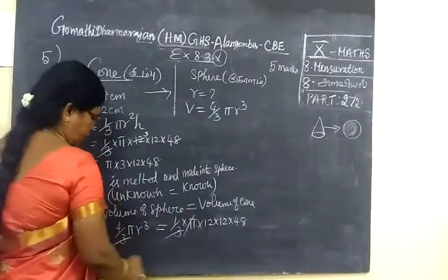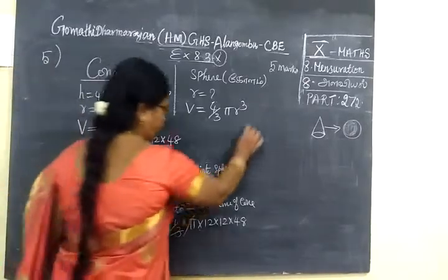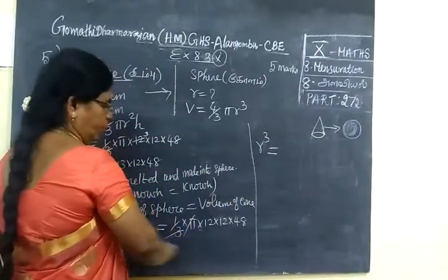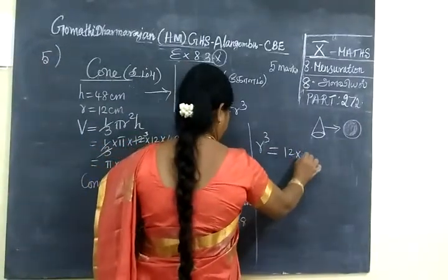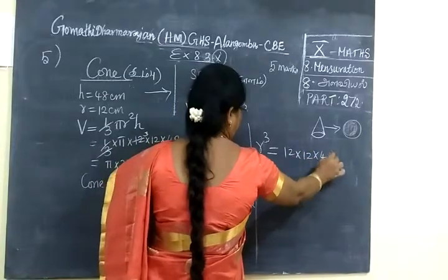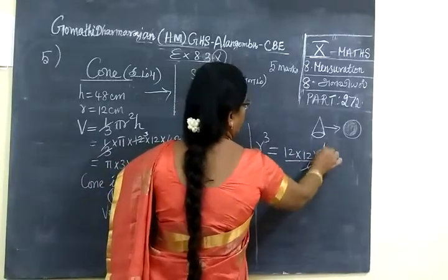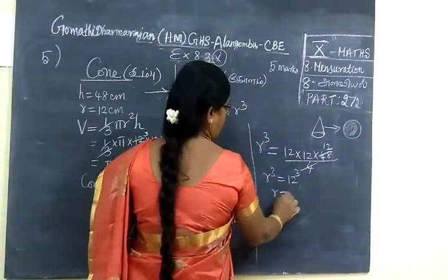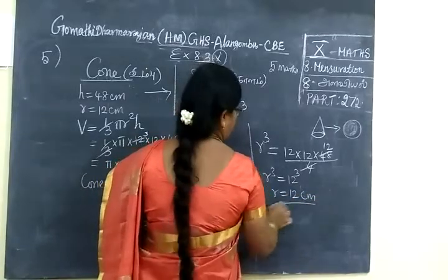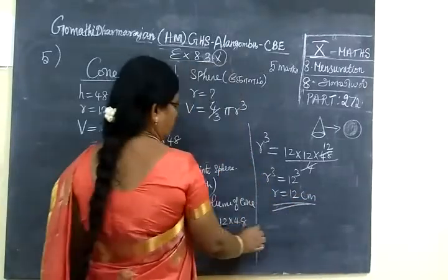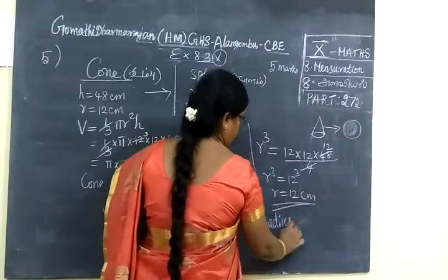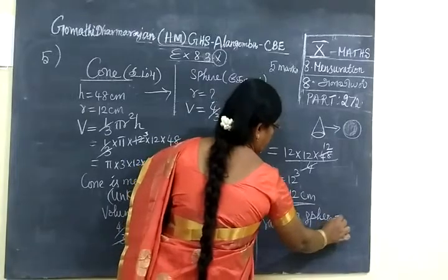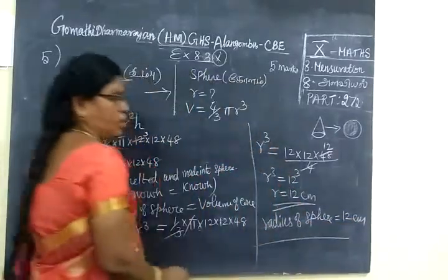Therefore R³... divide by 4, this is 12 times 12 times 12. R³ equals 1728, so R equals 12 centimeters. That is radius of sphere equal to 12 centimeters.